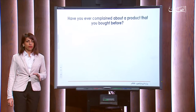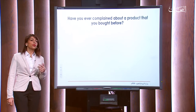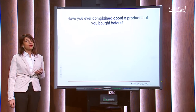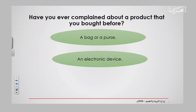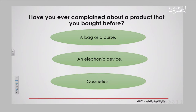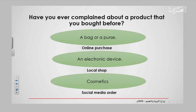Let me ask you a general question. Have you ever complained about a product that you bought before? Or let's say a service — it's not necessarily a product. For example, maybe you bought a bag or a purse. It could be an electronic device, cosmetics, or any other items. Where did you buy these from? It could be an online purchase, a local shop, or maybe you ordered that item from one of the social media applications.